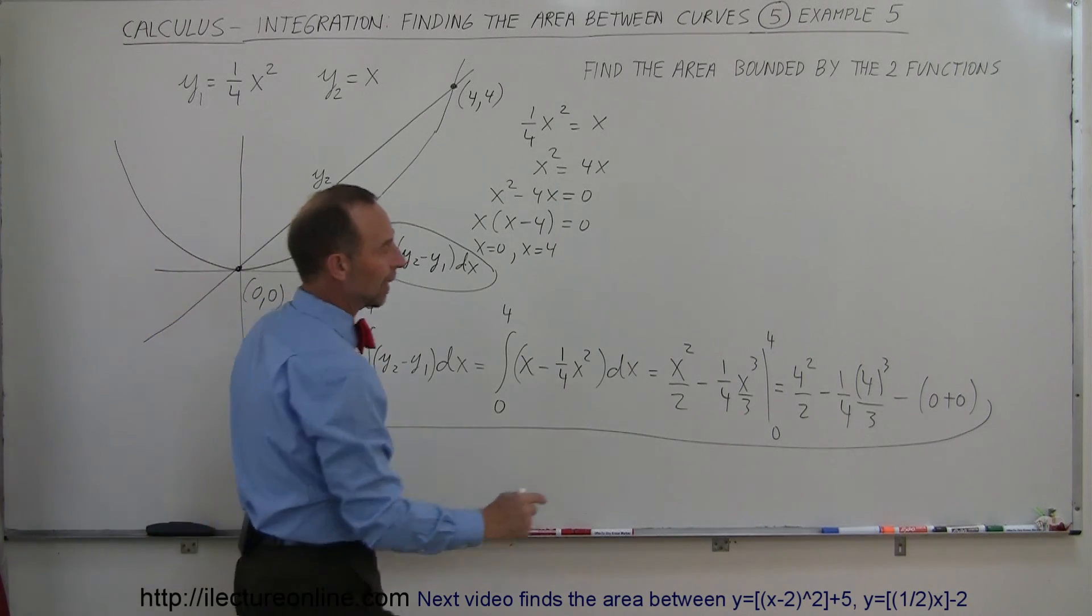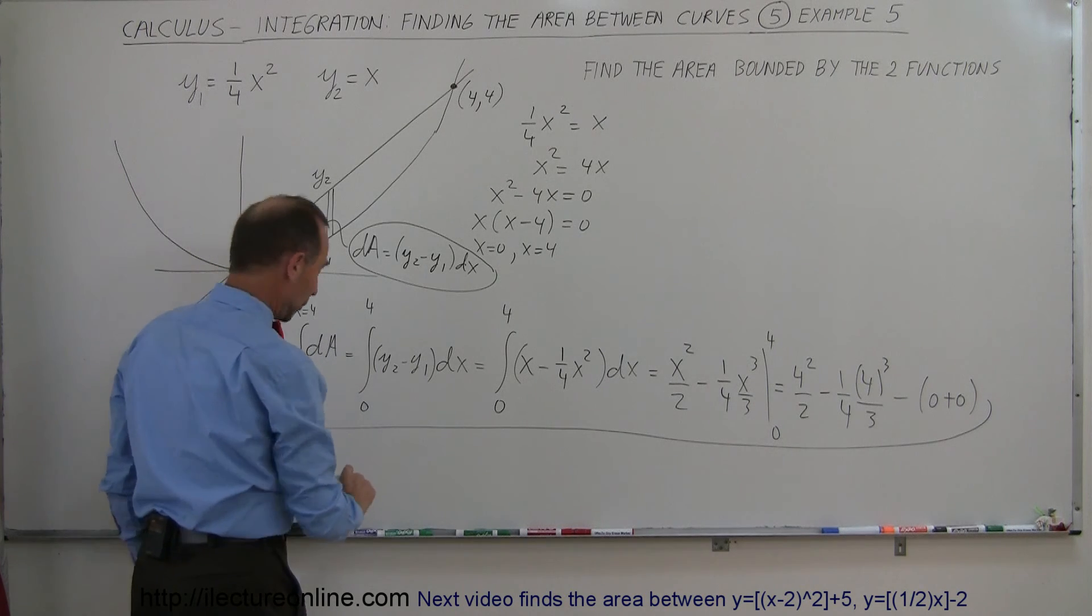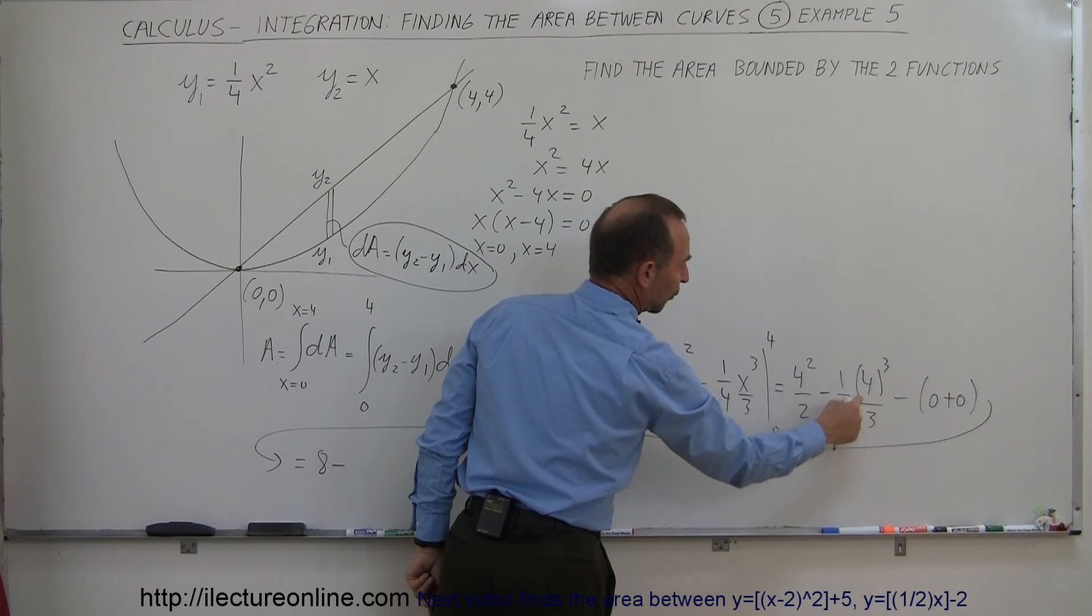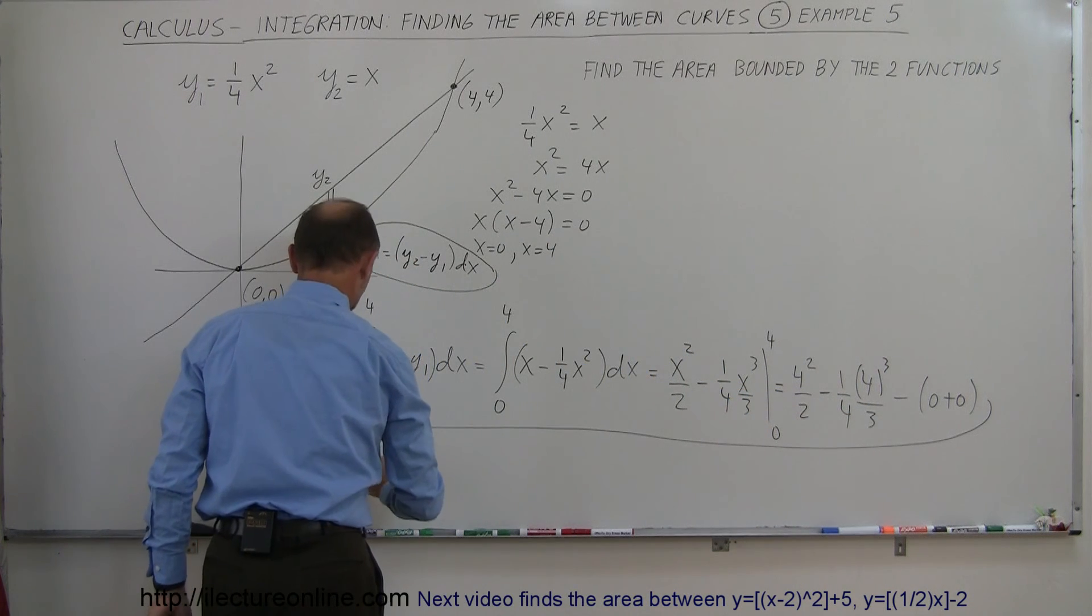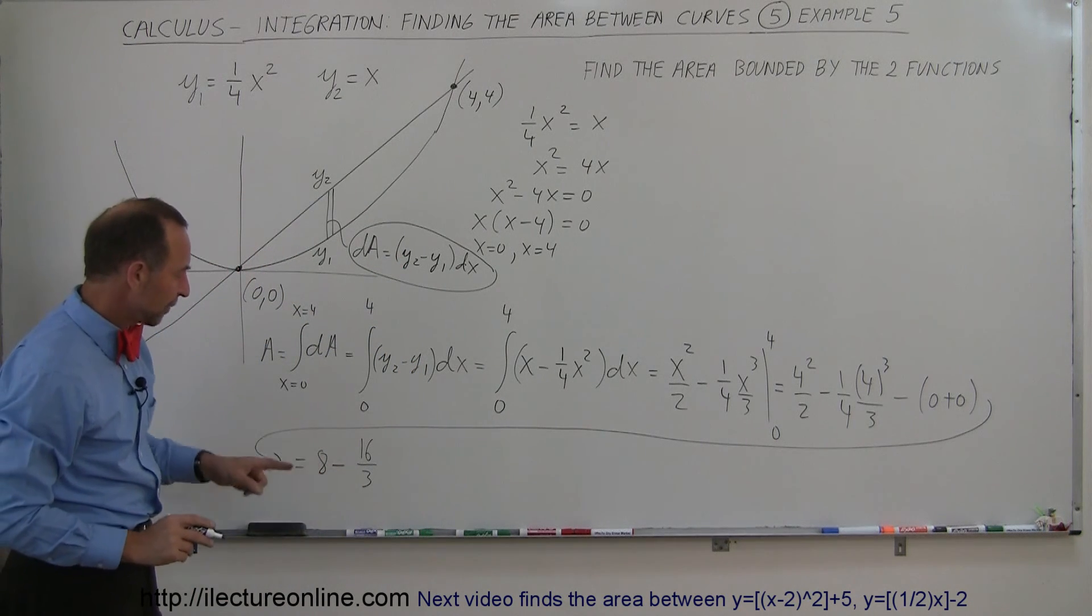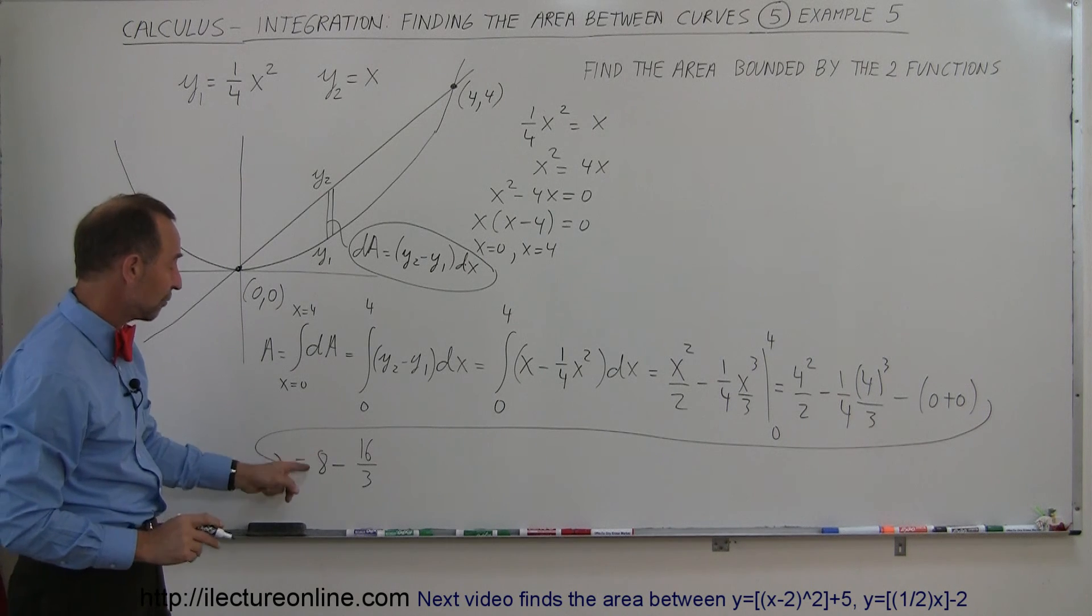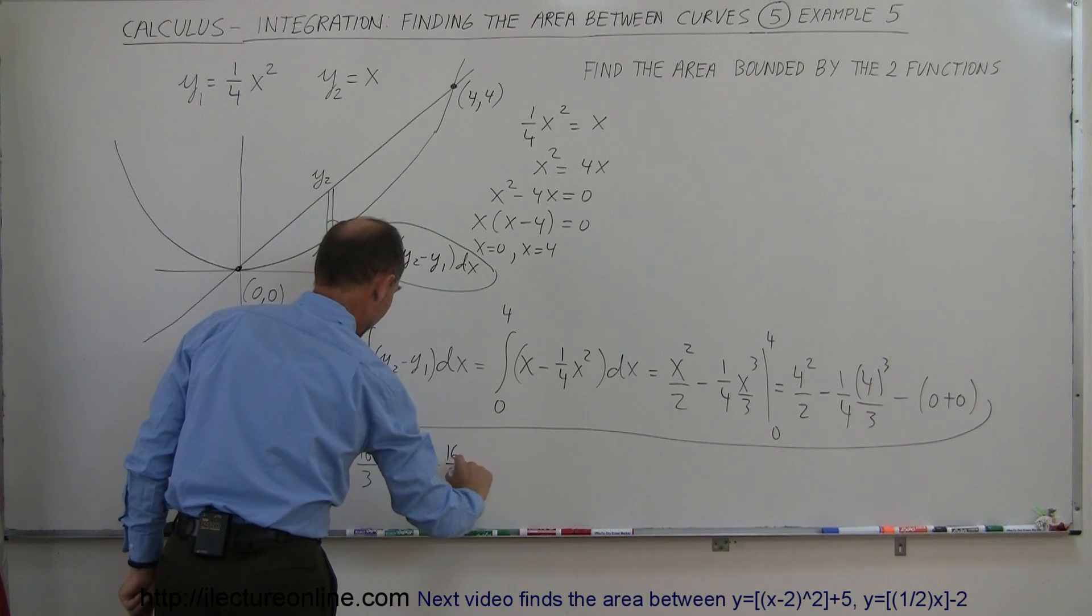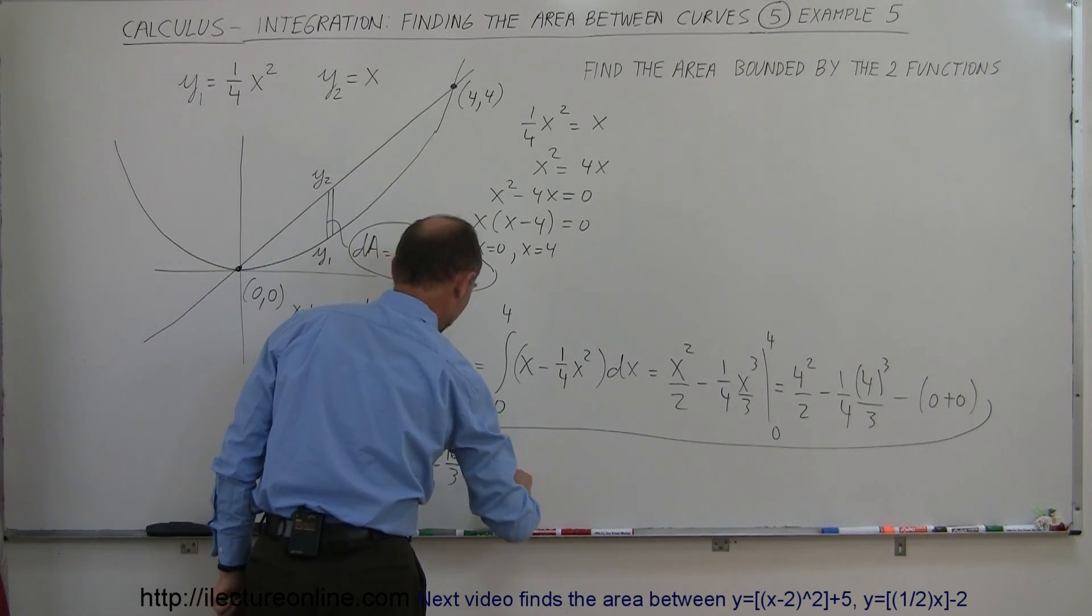Let me continue to simplify this. We have 4 squared, that's 16 divided by 2, which gives me 8, and that would be minus, 4 cubed is 64, divided by 4 which is 16, divided by 3, so I get 16 divided by 3. If I want to solve that, I have to put over the same denominator, so 8 is the same as 24 divided by 3, minus 16 divided by 3, and 24 minus 16 is equal to 8 divided by 3.